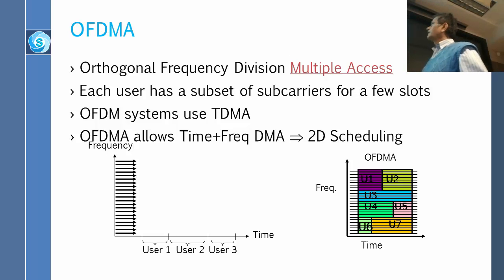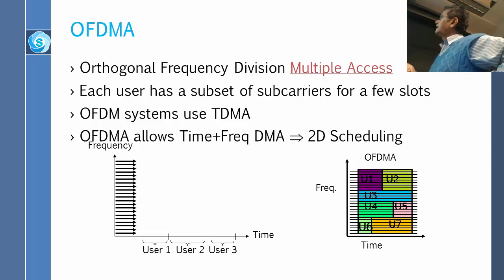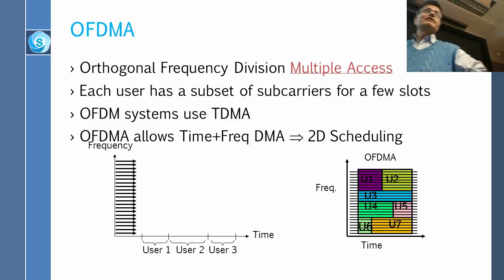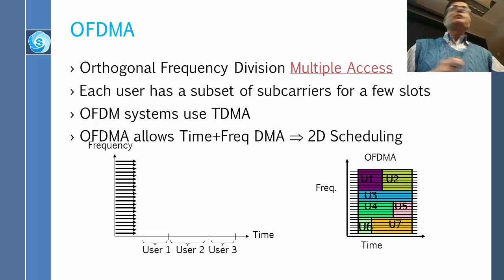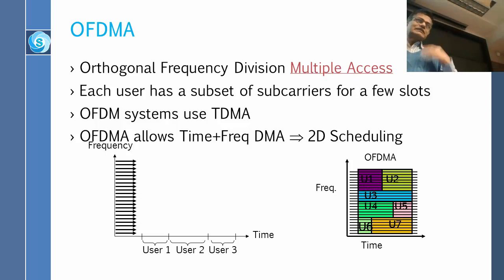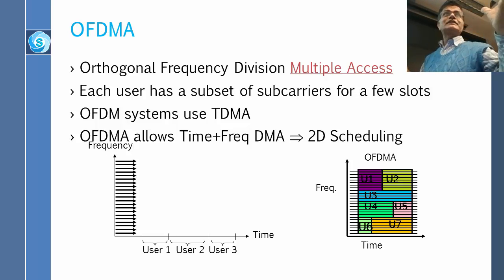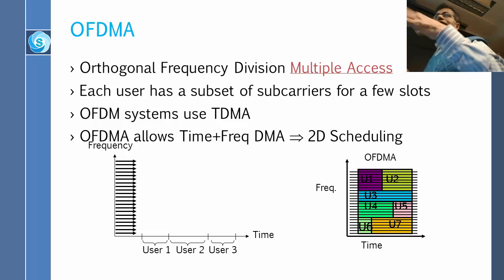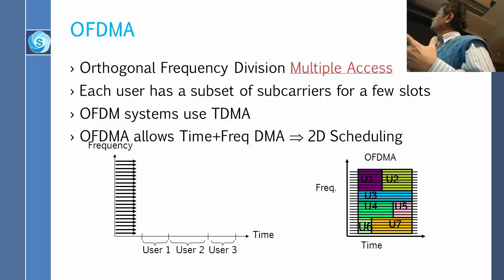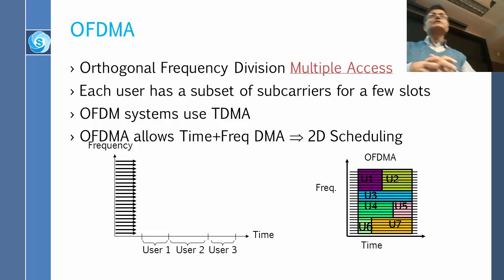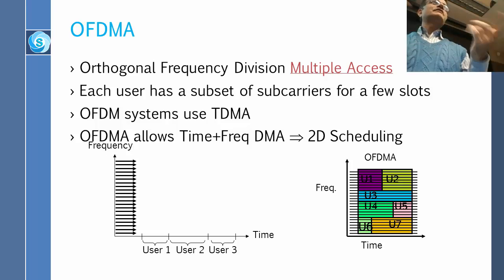This is different from TDMA and FDMA. In TDMA, you give all frequencies to one user for a time slot, then all frequencies to the next user. In FDMA, you give one frequency for the whole time to one user. But in OFDMA, these frequencies are orthogonal — that is why the O is there — and we have 2D scheduling across both time and frequency. From now on you will see 2D diagrams with time and frequency axes, and users are assigned both a time duration and a set of frequencies.